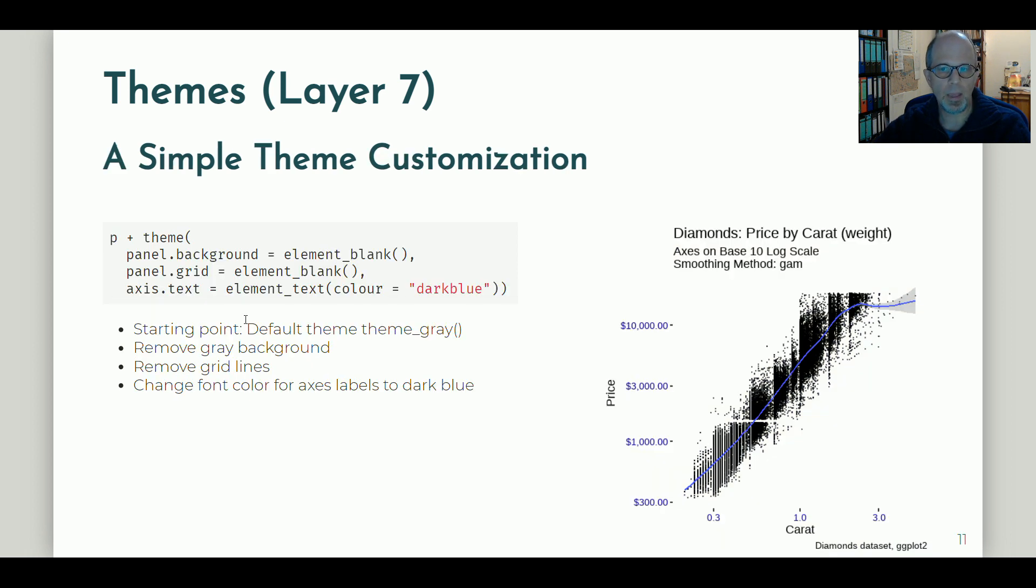Lastly, if you don't find the theme that perfectly suits your needs, you may want to adjust themes manually. You can also do that and apply some customization. Here's a simple example. The starting point here is the default theme_gray, and then I removed the gray background using the panel_background parameter. I removed the grid lines and I changed the font color for the axis labels to dark blue. You can discuss of course if this type of theme makes sense, but I hope it illustrates how you can manipulate themes.